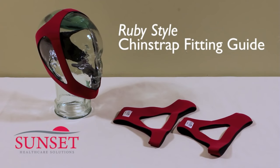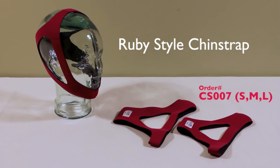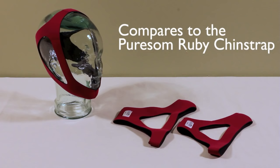Hi, my name is Brenton and I work in the product development department for Sunset Healthcare. Today we are going to demonstrate Sunset's new ruby style chin strap, order number CS007. This chin strap is designed to directly compare with the PureSOM ruby chin strap.